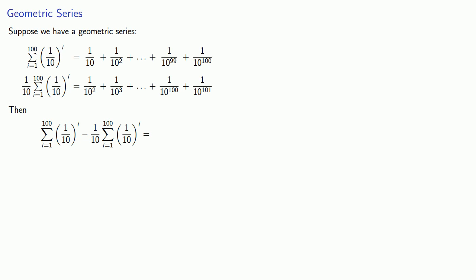So when we subtract, this term 1 over 10 to the second will cancel out with this term, 1 over 10 to the second. The 1 over 10 to the 3rd in the subtracted series will cancel out the 1 over 10 to the 3rd in the original series, which is the term after this 1 over 10 to the second.